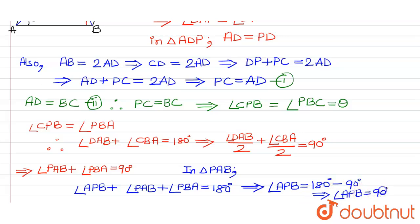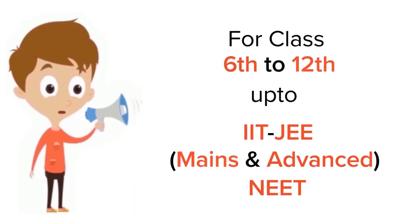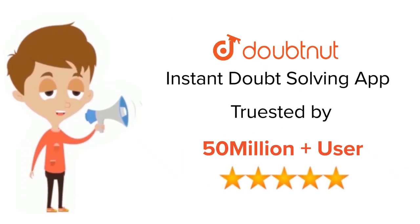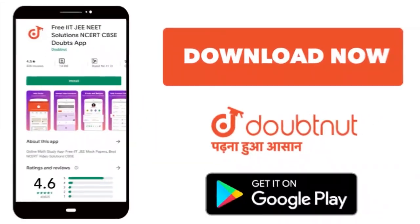So we get angle APB is equals to 90 degrees. So hence we have proved the result. Hopefully you understand the video. For class 6-12, IIT-JEE and NEET level, trusted by more than 5 crore students, download Doubtnet today.